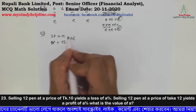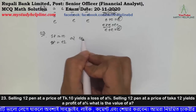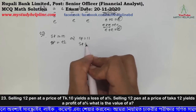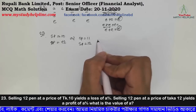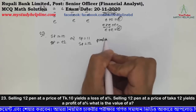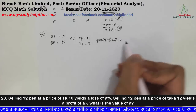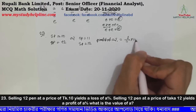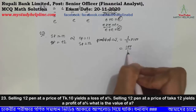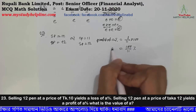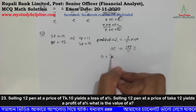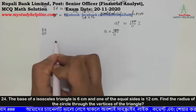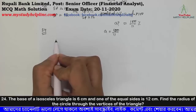Profit percentage: cost price is 11, selling price is 12. So profit is 1. Profit percent equals profit divided by cost price multiplied by 100. That gives 1 over 11 times 100. The value of A percent comes out. Number twenty-four: the value of A percent is calculated accordingly.